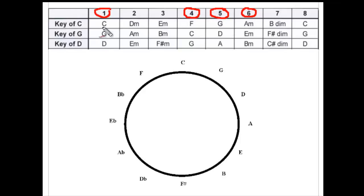In the key of C, the chord progression would be C, G, A minor, F. In the key of G, it would be G, D, E minor, C. In the key of D, it would be D, A, B minor, G.